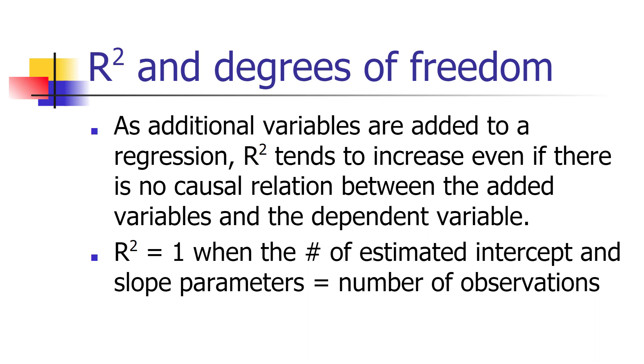So as you add more and more variables to the equation, you're going to start approaching an R-squared of one. That's probably not the best way to test for the strength of a relationship between your dependent variable and your independent variables.